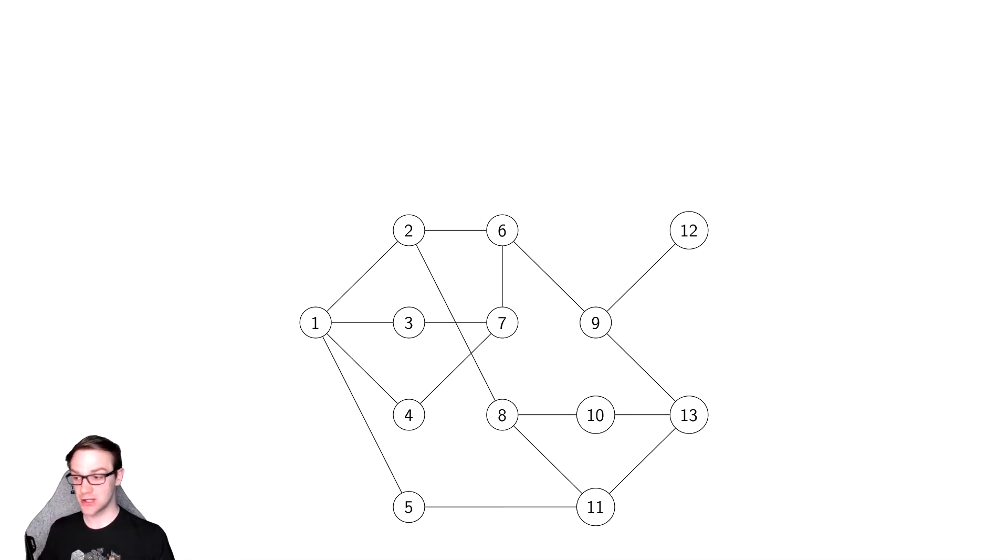This idea of backtracking might naturally lead you to think we can do this recursively, which is what we're going to do. This is going to be a recursive algorithm which explores as deep in the graph as possible, Depth First Search, and then slowly backtracks out from that location.